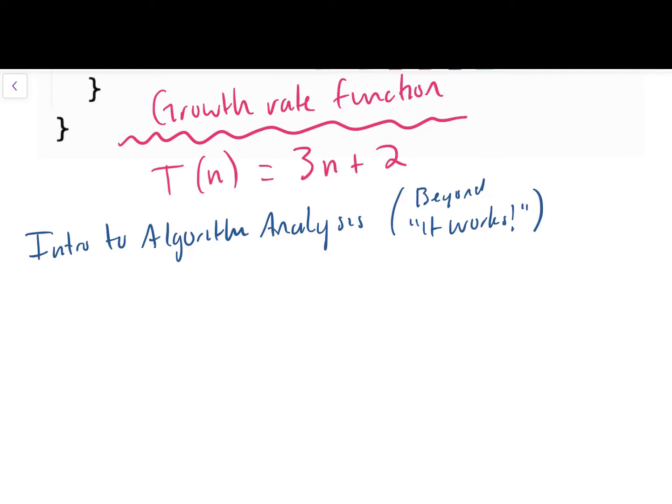In parentheses here, I'm going to put our informal title, which is beyond the idea of it works. When we're first learning to code, it's hard enough just to get our code to produce the correct output. Once we get that, we're usually pretty excited and ready to move on to the next task or feature or problem. But now that we're gaining some experience with programming algorithms and problem solving, we want to go beyond simply our code works and produces a correct result.